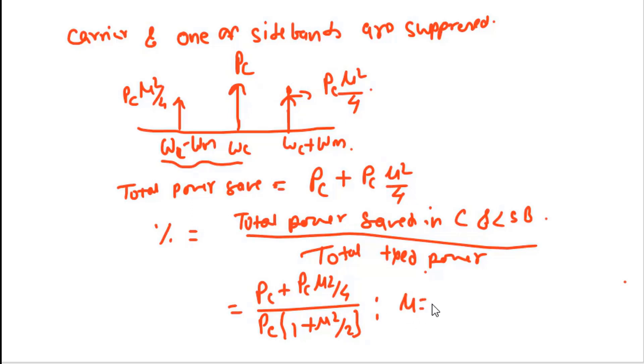For μ = 0.5, this percentage is 94.4%. So 94.4% power is saved when you are not transmitting the carrier and one of the sidebands.